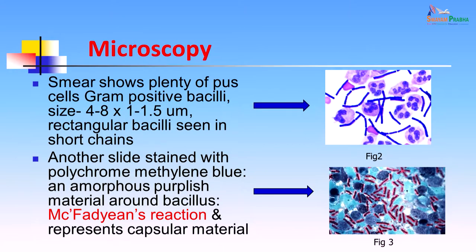On microscopy, the smear showed plenty of pus cells and Gram-positive bacilli about 4 to 8 microns in size by 1 to 1.5 microns. They were fairly large rectangular bacilli seen in chains with a halo of a capsule around them. This picture shows the Gram-positive bacilli present in chains and the plenty of pus cells. They give a halo of a capsule, but the capsule is not very clearly seen.